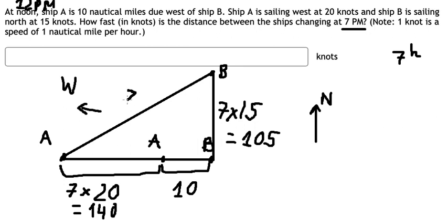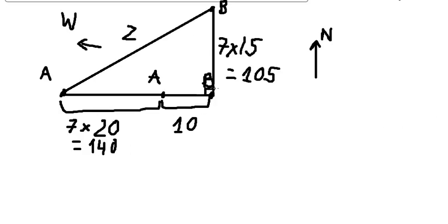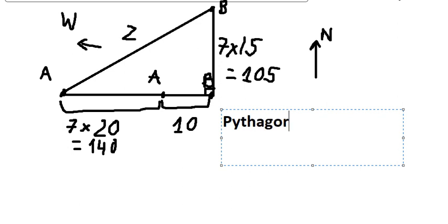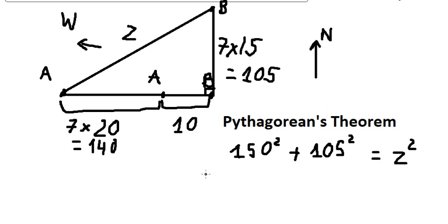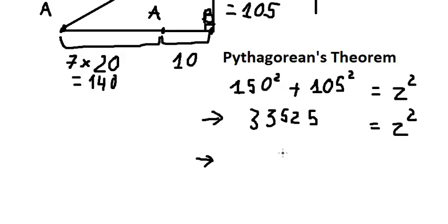I will put the new distance as z. This is a right triangle, so we can use the Pythagorean theorem. We have 104 plus 10, giving us 150 — wait, 160 squared plus 105 squared equals z squared. We calculate this and get 33,525. Now we put the square root on both sides and we get z equals 15 times the square root of 149.